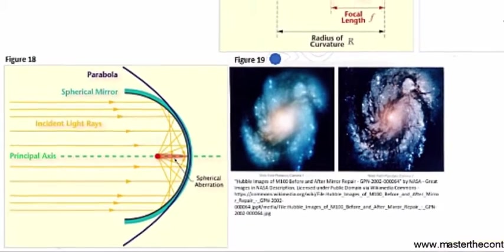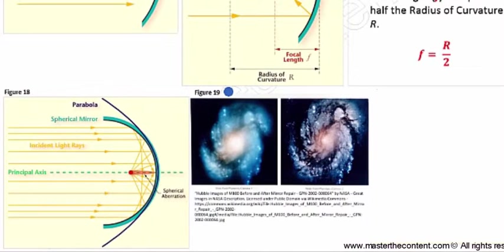Now, coming over here to figure 19, a well-documented case of substantial spherical aberration took place with the Hubble Space Telescope mirror. And as we see on the right, astronauts had to later install corrective optics, and the resulting image of the core of the galaxy M100 was seen with dramatic improvement.